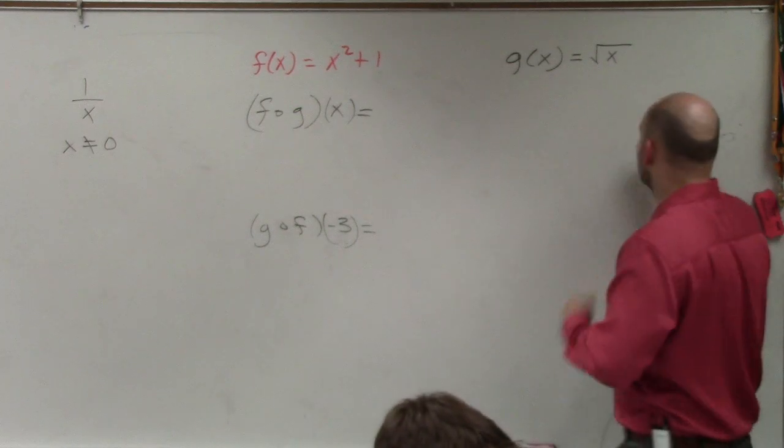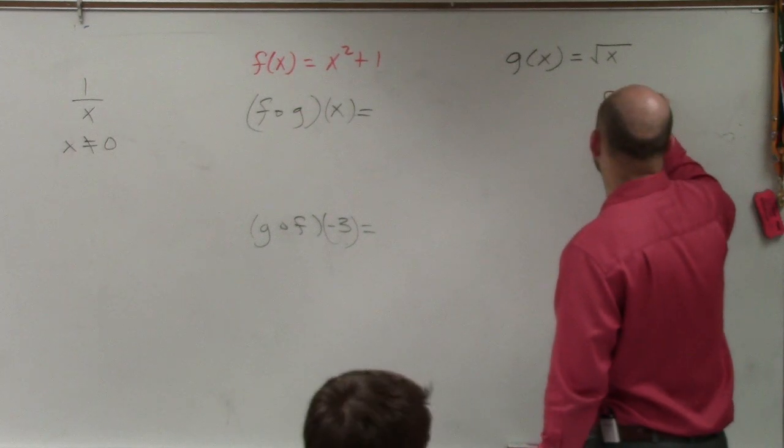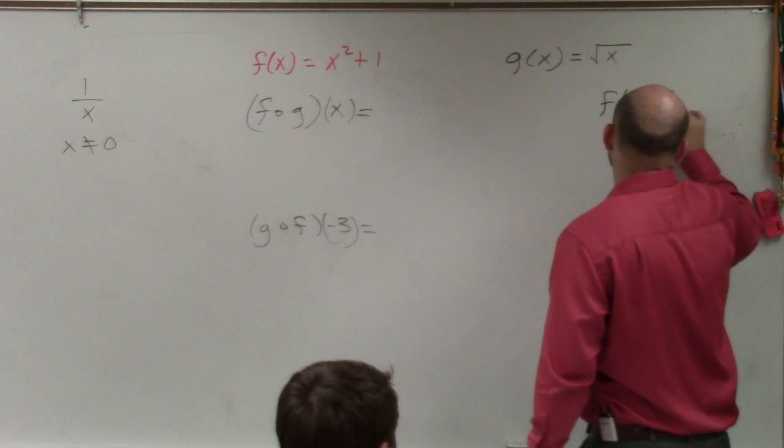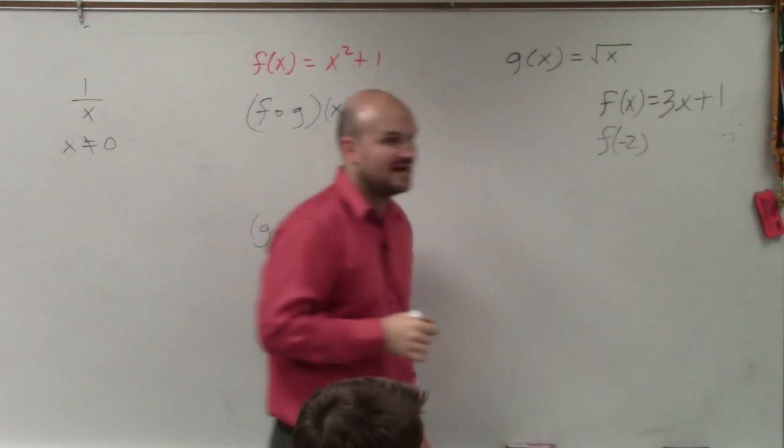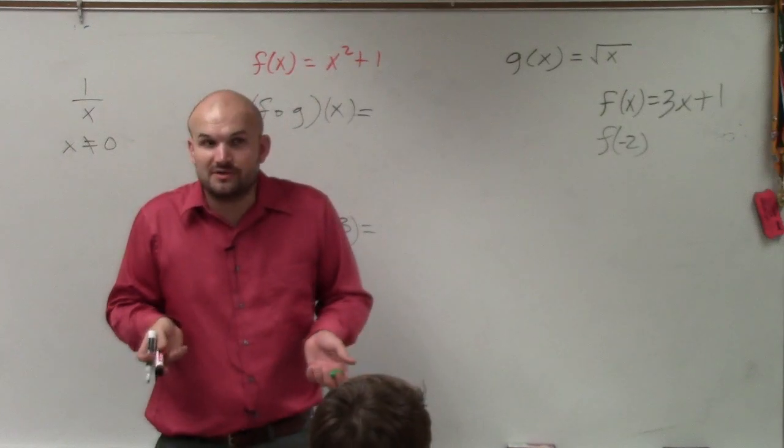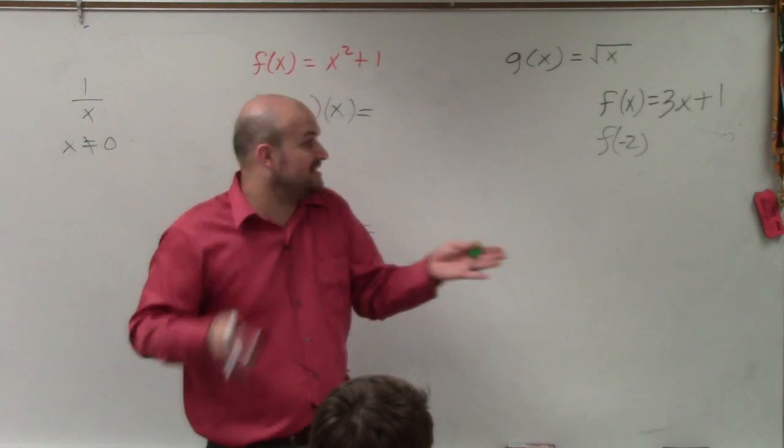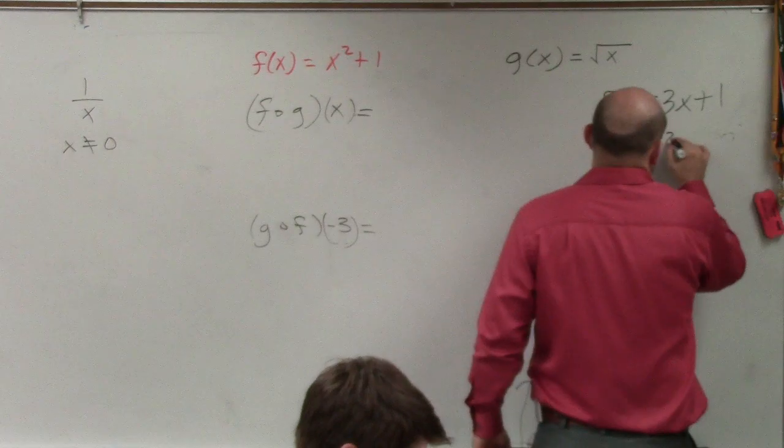So again, as I'm going over it, if you guys remember, if I said f(x) equals 3x plus 1, in your test I gave you something like this: f of negative 2. What did you do for negative 2? You replaced the input variable x with negative 2.